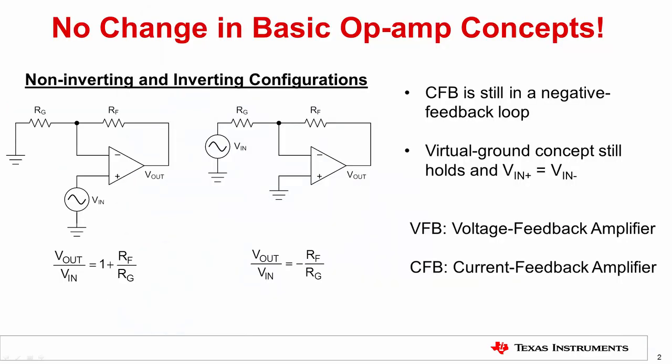Before I get into the details of current feedback op amps, I should clarify a couple of points. The equations used to determine the signal gain of a current feedback amplifier are the same as those used for a voltage feedback amplifier. The gain in the non-inverting configuration is 1 plus RF over RG, where RF is the feedback resistor and RG is the gain resistor. Similarly, the gain in the inverting configuration is minus RF over RG. A current feedback op amp is always configured in a negative feedback loop, and the virtual ground concept still holds true — the voltage at the non-inverting input, VIN plus, equals the voltage at the inverting input, VIN minus.